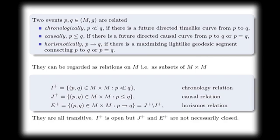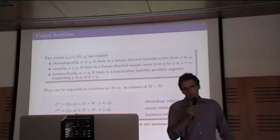The nice thing is that the first two, the chronology and the causality relation, are transitive. Moreover, in general, there is a theorem which states that chronology is open. But in general, causality and the horismonus are not necessarily closed.